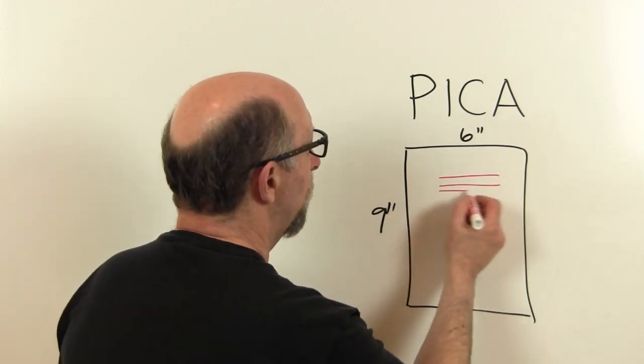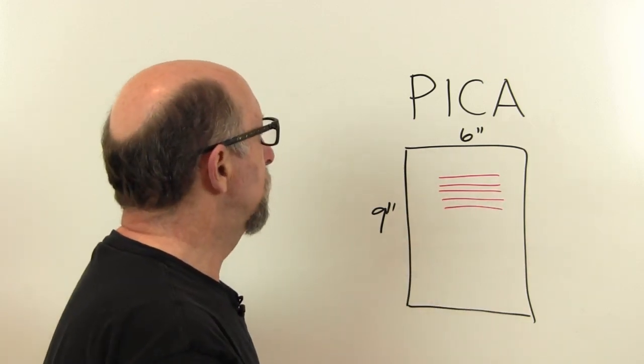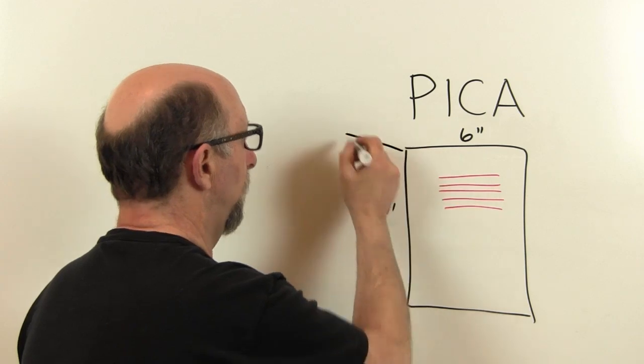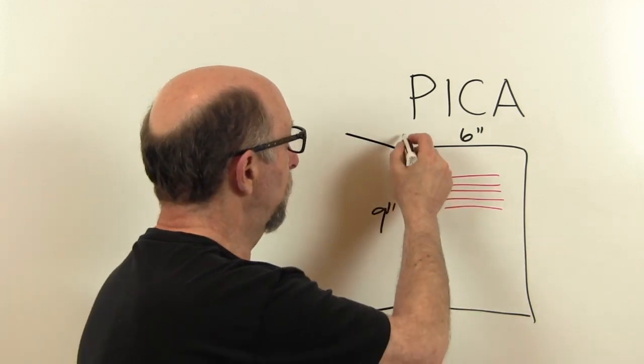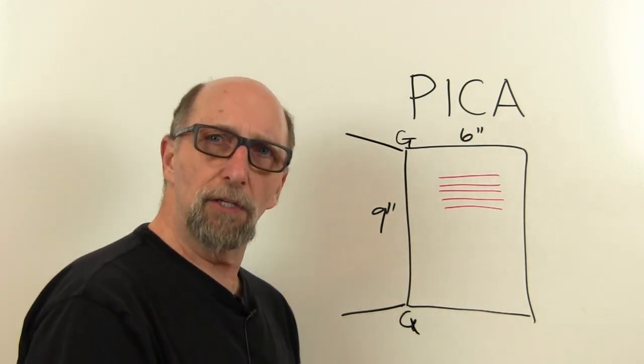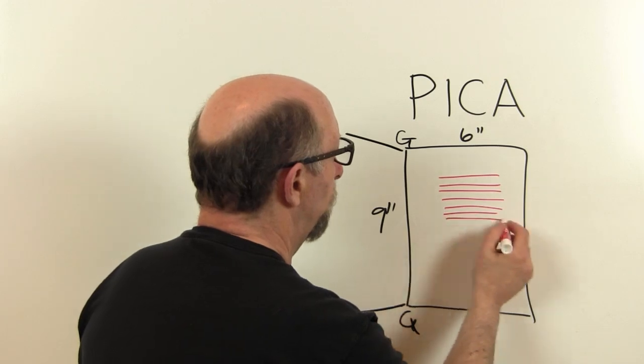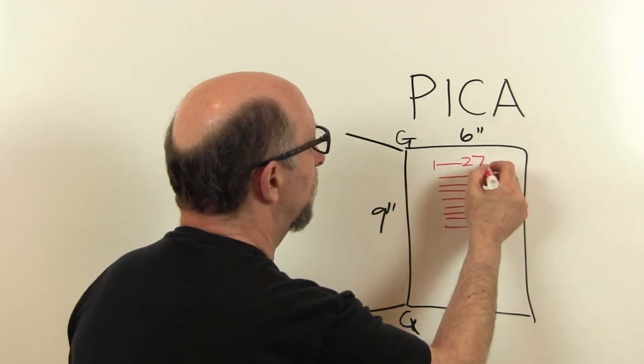So here's your type on your page. Let's say this is the gutter here. And that means that's where the left-hand page is and that's the right. So this is the gutter. We've got our page set up and we've got a line length here of 27 Picas.